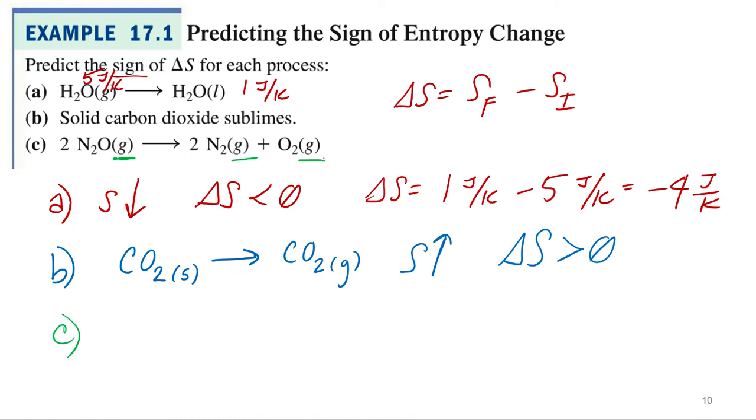You're going from a bigger molecule to two separate molecules. I like that, so we're going from one bigger thing to two smaller things. Would that be increasing entropy or decreasing entropy? Increasing? Yeah, it's going to be increasing.